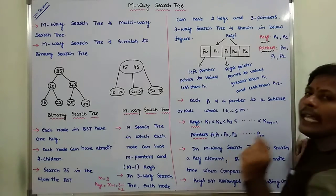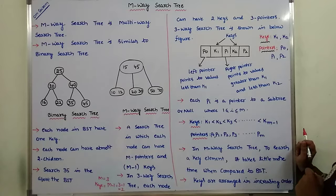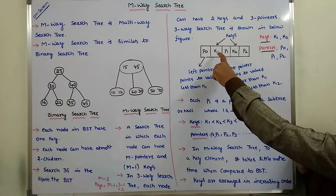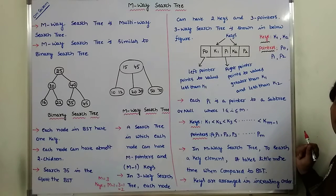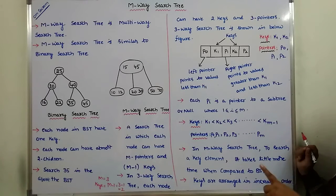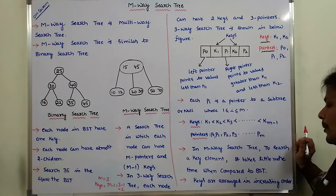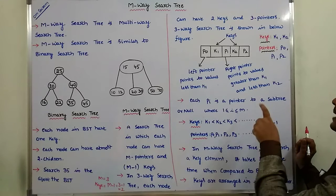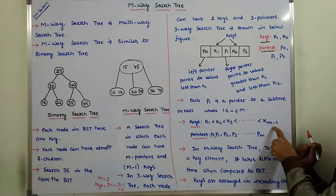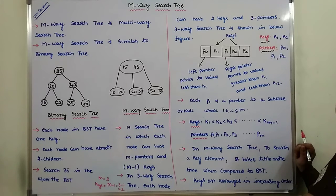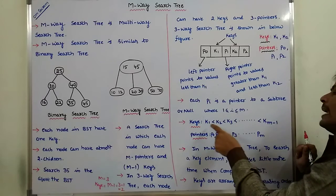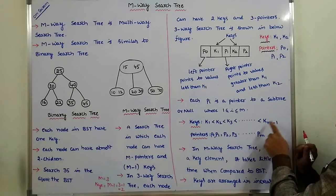The keys are K1, K2, K3 up to K suffix M minus 1, and they are arranged in increasing order. In the 3-way search tree, K1 and K2 are 2 keys, with K1 less than K2. In general: K1 less than K2 less than K3 less than up to K suffix M minus 1. There are M minus 1 number of keys. In the M-Way Search Tree, the keys are always arranged in increasing order.